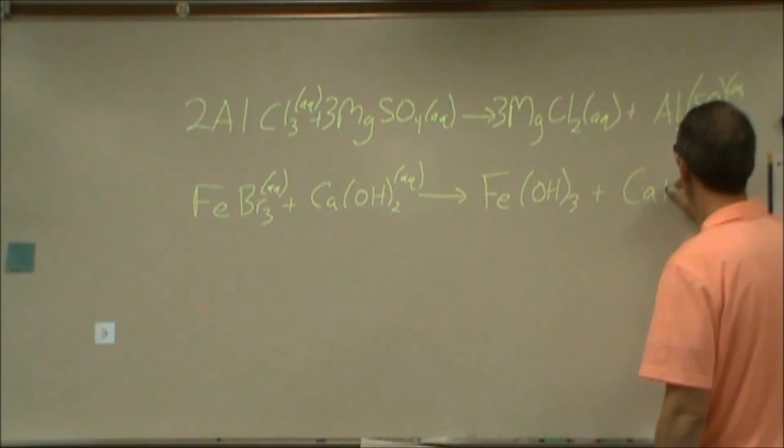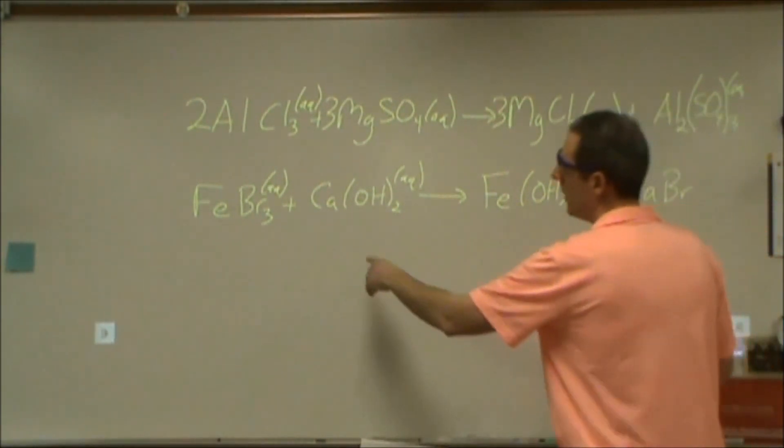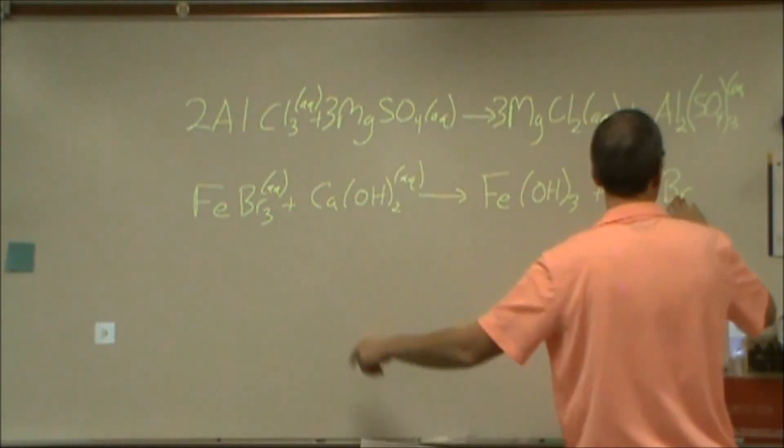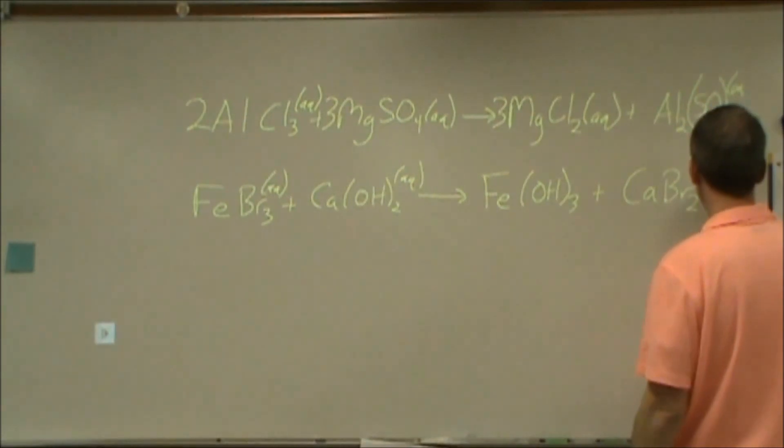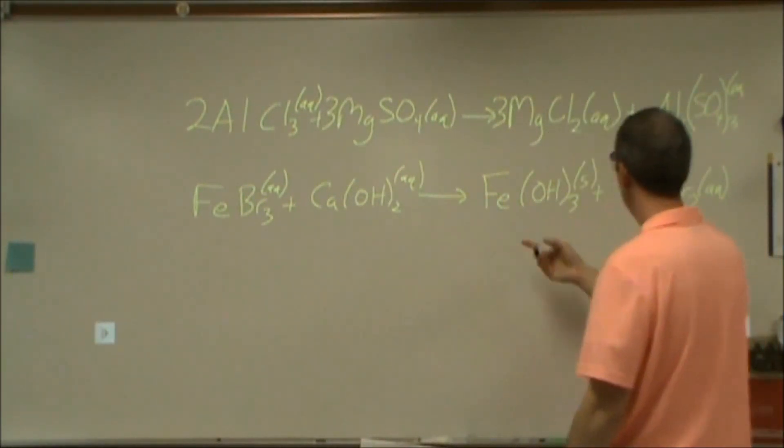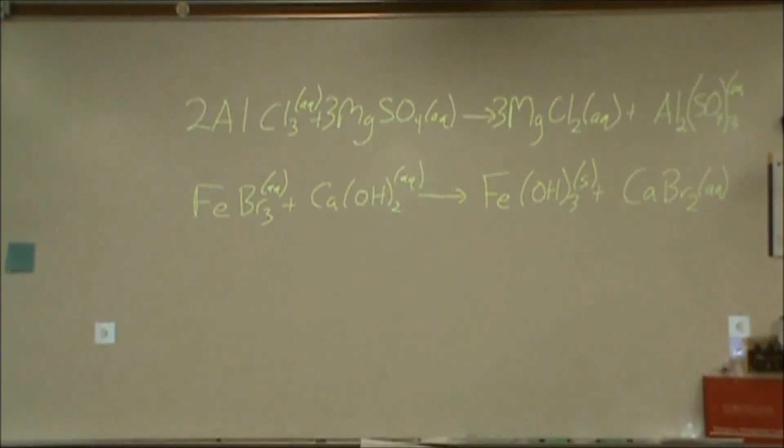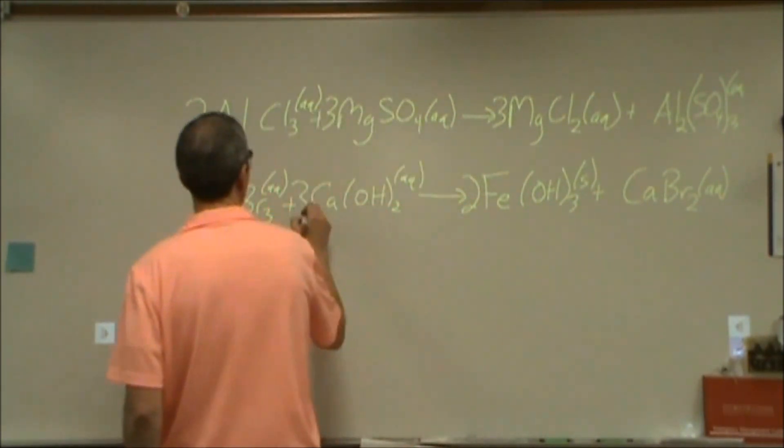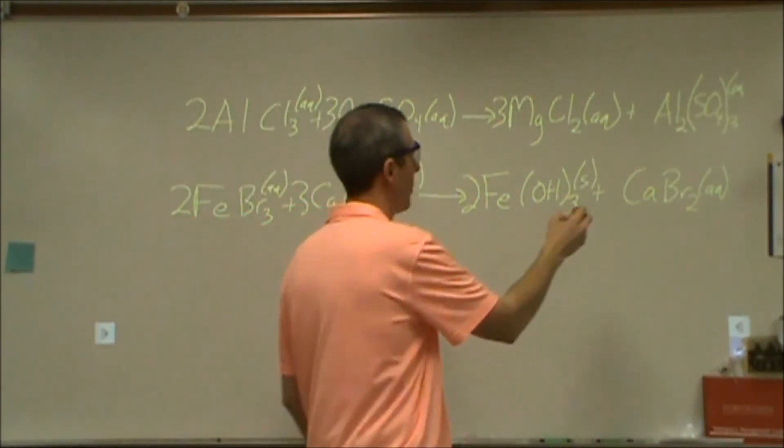For the calcium bromide, we're looking at a plus two charge, a minus one charge, CaBr2. That'll be aqueous. This is insoluble. And then we could go through and balance things. We'll do two, three, two, and three.